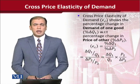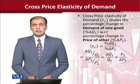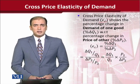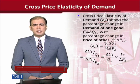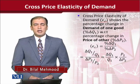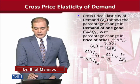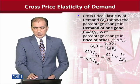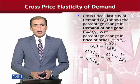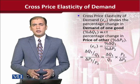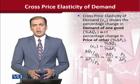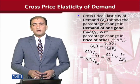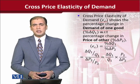We need to have a notation for the cross price elasticity of demand. We have chosen Epsilon C, where C stands for cross price, and Epsilon is a Greek letter that shows the value of elasticity. The formula is the ratio of the percentage change in the demand of one good and the percentage change in the price of the second good — that ratio gives us the cross price elasticity of demand.